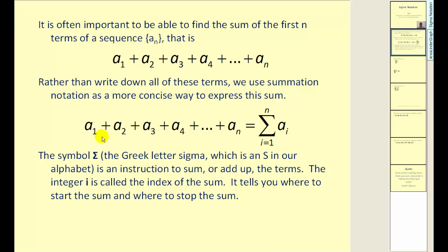So we can rewrite this sum using what's called sigma notation. This symbol here, the Greek letter sigma, which is an S in our alphabet, is an instruction to sum or add up the terms. The integer i is called the index of the sum, and this tells us where to start the sum and where to stop the sum. Essentially, you can think of this as an adding machine.